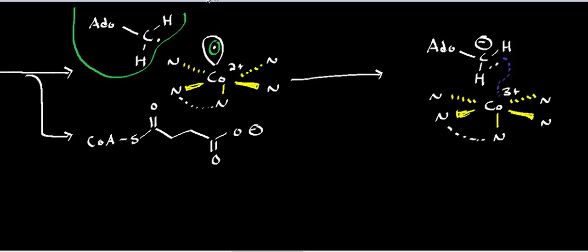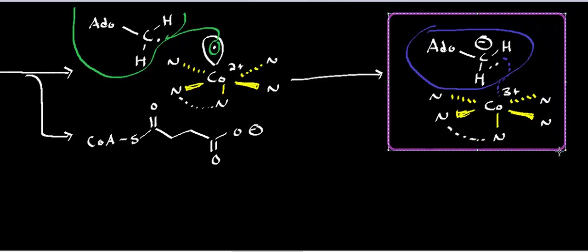So this is the cobalt of the corin ring system, and that electron is going to reduce the radical 5-prime deoxyadenosine into now what we have as the anionic form. And in the process, as cobalt gives up that electron, the cobalt now is oxidized into the 3-plus state. And so this right here regenerates the methylmalonyl-CoA mutase cycle.